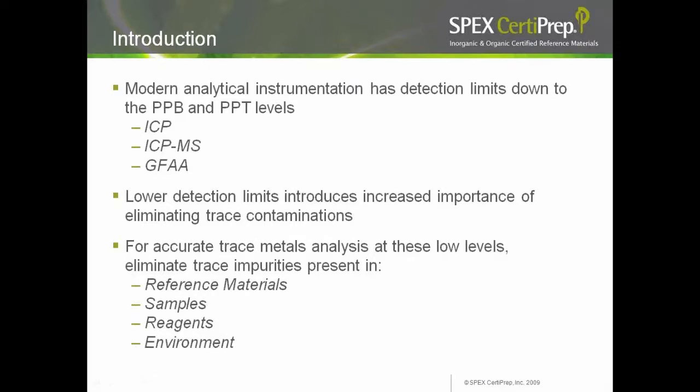Technology in the manufacture of instruments has evolved leaps and bounds in the past few decades. Detection limits have decreased tremendously. Instruments with these new innovative technologies can detect trace impurities in PPB (microgram per liter), PPT (nanogram per liter), or even at parts per quadrillion (picogram per liter). Such instruments are of no use if we do not identify, minimize, or eliminate totally such impurities, because these impurities can cause interference and produce inaccurate results.